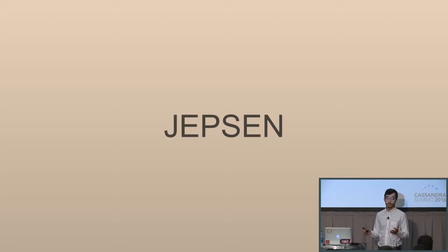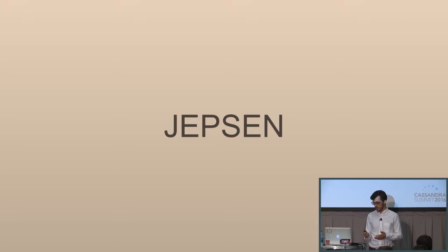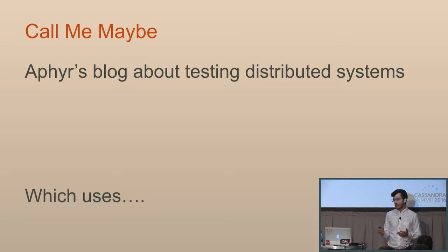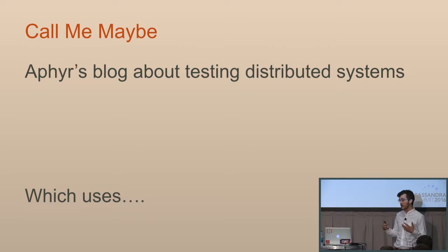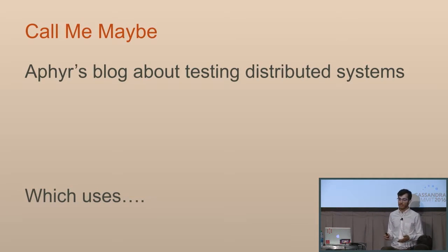So how are we going to handle those problems? I'm here to talk about Jepsen. 'Call Me Maybe' is a blog series written by Aphyr — whose real name is Kyle Kingsbury — and it's a blog about testing distributed systems. Kyle has done work testing things like Riak, Basho, Mongo, Cassandra, Kubernetes, Mesosphere, and what he's found is that essentially every distributed system on the market has correctness bugs.